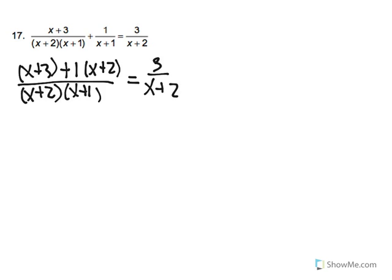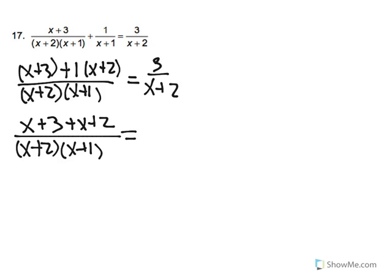And now we combine like terms. We have x plus 3 plus x plus 2 over x plus 2 times x plus 1 equal to 3 over x plus 2.